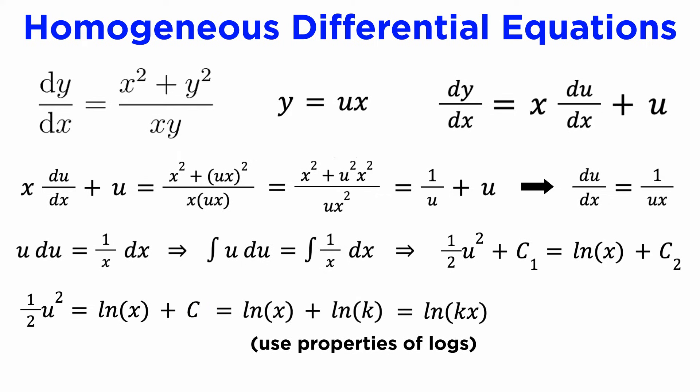Notice that here we can absorb the constant c into the logarithm, replacing it with a new constant k, where k equals e to the c. From this we get the implicit solution for u in terms of x, as u squared equals 2 log kx.